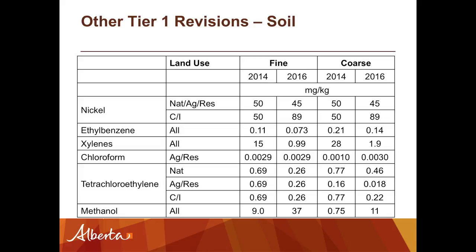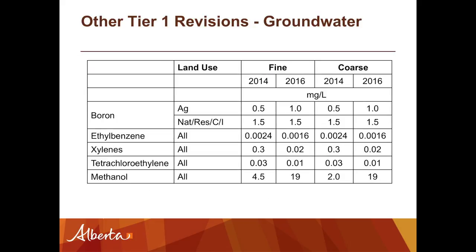For groundwater, we're seeing basically a similar thing happening — anything that changes in soil changes in groundwater. The groundwater Tier 1 revisions cover boron, ethyl benzene, xylene, PERC, and methanol, with similar orders of magnitude change to the soil guidelines. There will be other changes that appear at a Tier 2 level, so if you're doing Tier 2s, check the tables in Appendix A and B of the Tier 1 guidelines to see whether some changes that didn't drive a Tier 1 revision may have some influence at Tier 2.